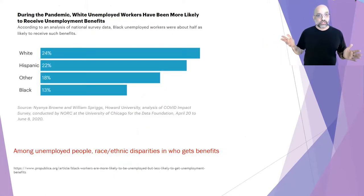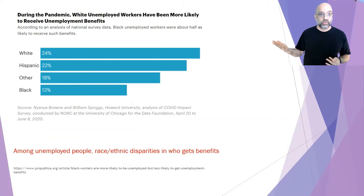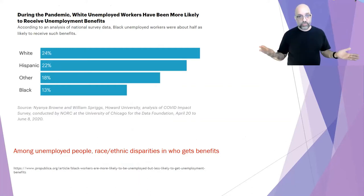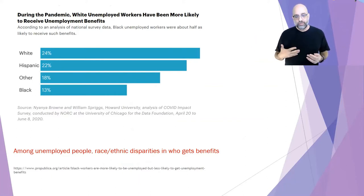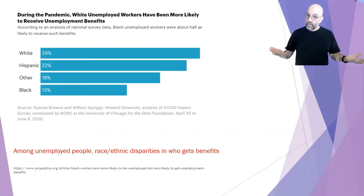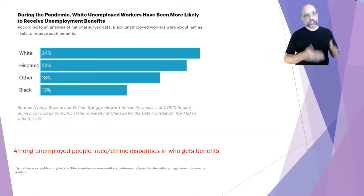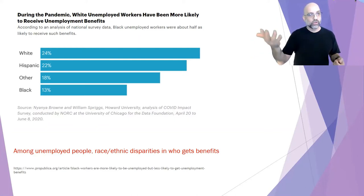We're also not dealing with this crisis equitably. One way to look at this: the percentage of unemployed people who are actually receiving unemployment benefits. It's a common myth that everyone who's unemployed gets benefits, but it requires paperwork, someone to approve it, the time and know-how to navigate the system, and a supportive bureaucracy. For all these reasons, whites are much more likely than Blacks who are unemployed to be receiving unemployment benefits. Hispanics are somewhere in between. This has to do with the states they live in, local governments, and access to this benefit supposedly provided to help people through the crisis.